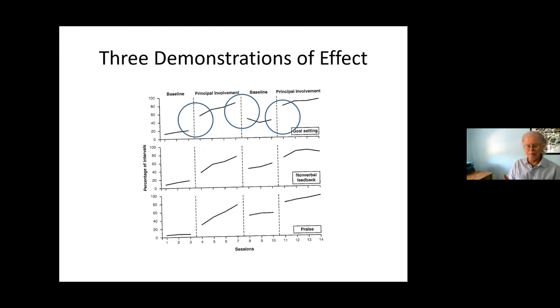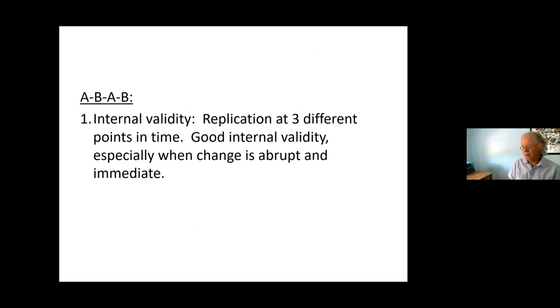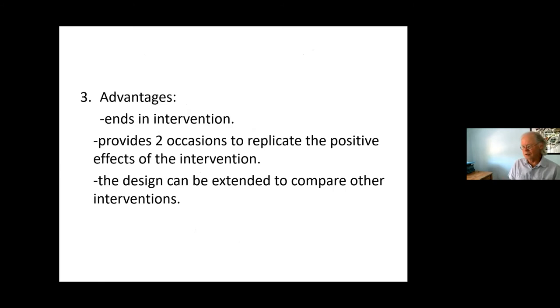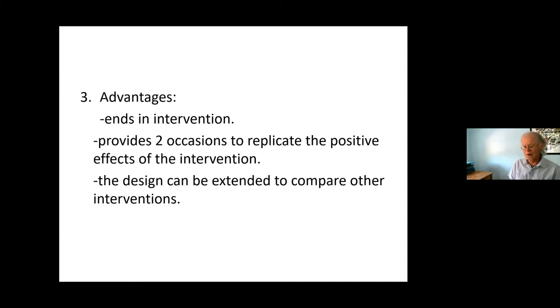As an experimenter, I can do three demonstrations of effect, I'll do four, I'll do five. The more demonstrations of effect you get, the stronger the study is. ABAB has good internal validity and good external validity. You can assume that the results will work with other individuals. Advantage is it ends in intervention, it provides two opportunities to replicate what you did. And the design can be extended to compare other interventions. You can do ABAB, ACAC, ADADAD, just to throw in different interventions and see what's most effective.